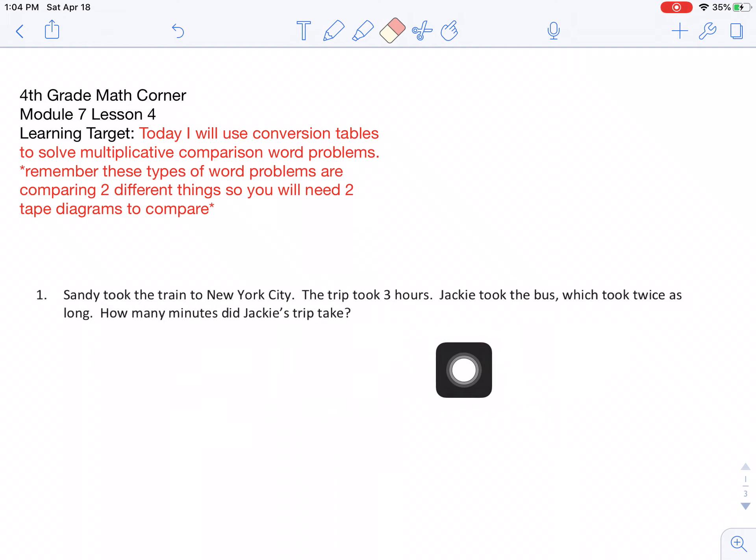So I have to understand what's happening. I know that there's two people, Sandy and Jackie, and they're both trying to get to New York City, but they take different ways. One person takes a train, and the other person takes a bus. So now we're trying to find out how long did the trips take.